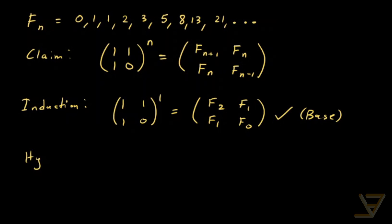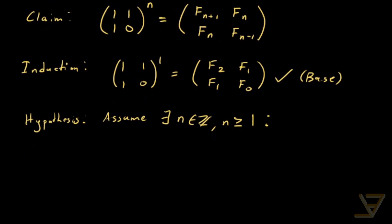For the inductive hypothesis, we will assume that there exists an integer n, where n is greater than or equal to 1, such that [[1,1],[1,0]] to the power of n, multiplied by itself n times, is equal to [[Fn+1, Fn], [Fn, Fn-1]].